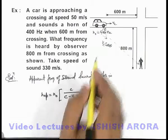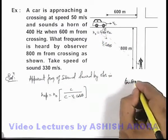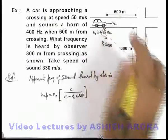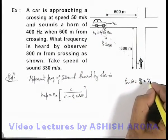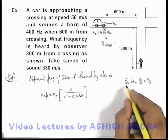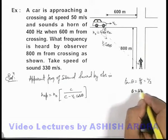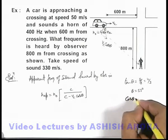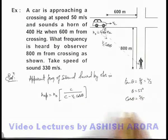In this situation, angle theta can be easily calculated. Here tan θ equals 800 by 600, which is 4 by 3. Correspondingly, if tan θ is 4/3, theta will be 53 degrees, and the value of cos θ will be 3 by 5.